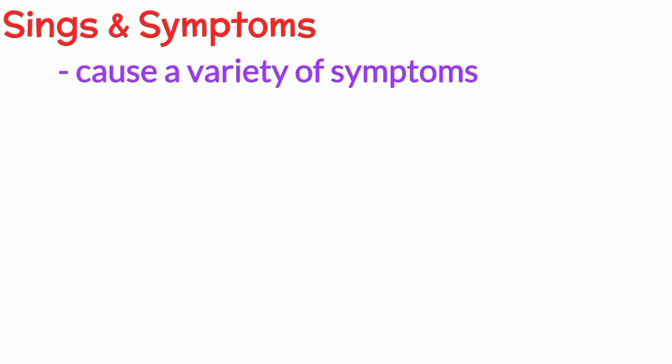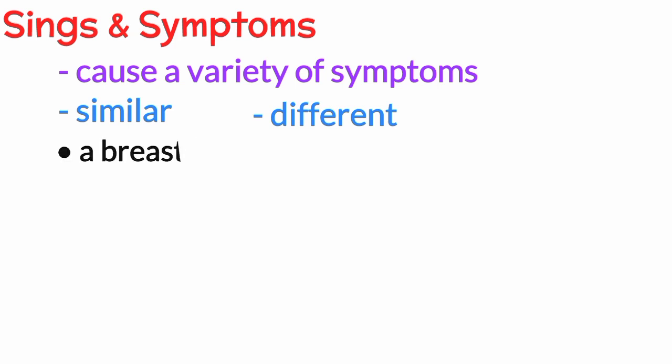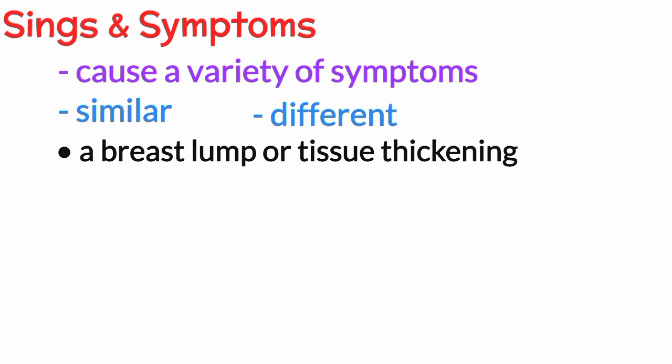Let's talk about the signs and symptoms of breast cancer. Each type of breast cancer can cause a variety of symptoms. Many of these symptoms are similar, but some can be different. Symptoms for the most common breast cancer include: a breast lump or tissue thickening that feels different than surrounding tissue and has developed recently.